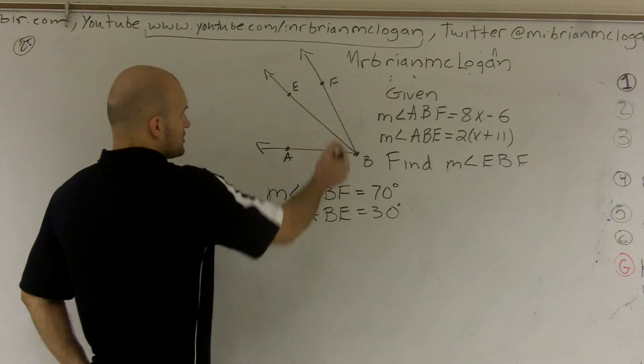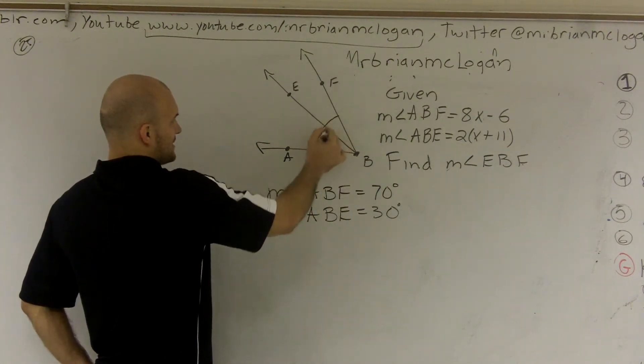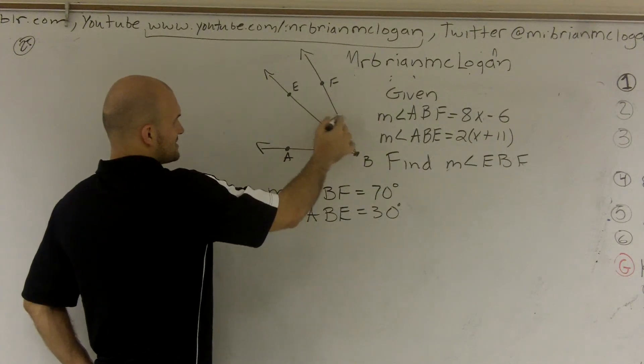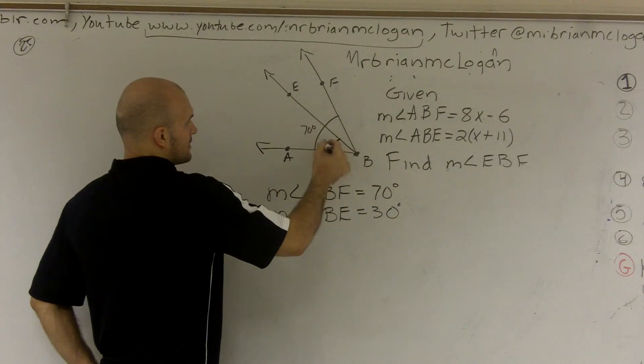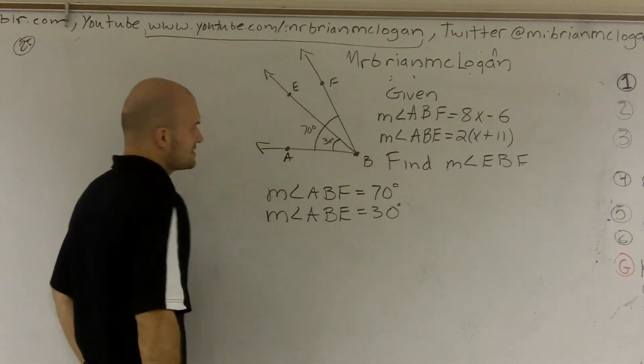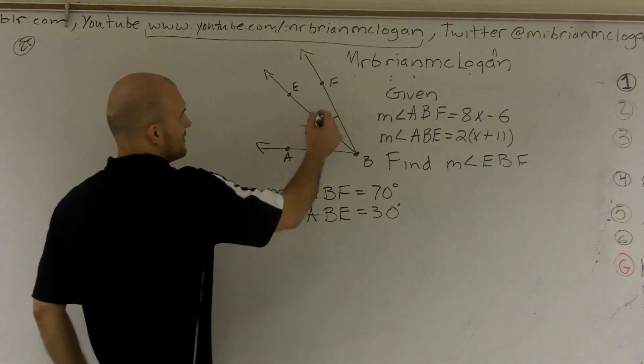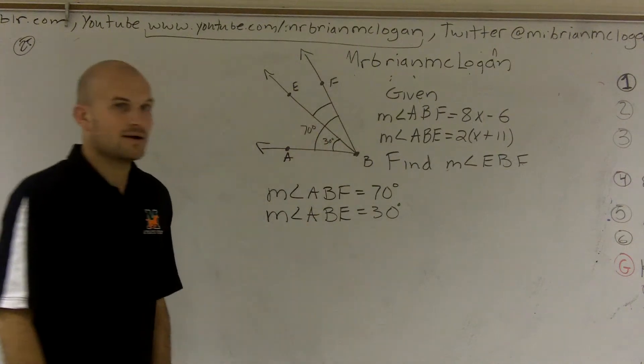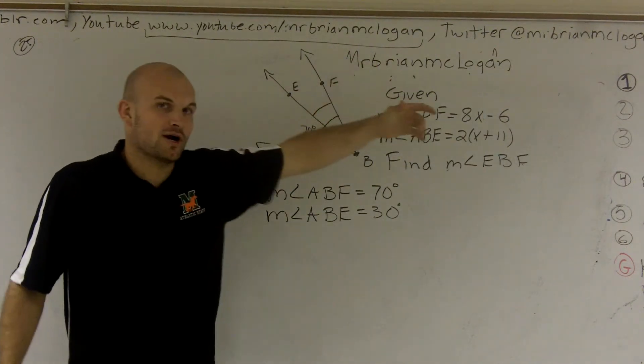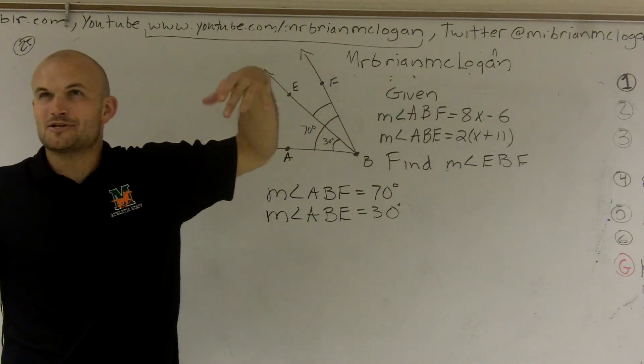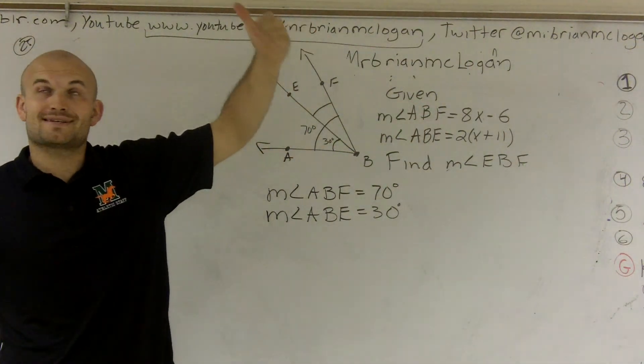Well, so what they're asking is if they say from here to here is 70 degrees and from here to here is 30 degrees, what is this? All right? Well, if I have the whole and then I have a part, to find the other part, you're going to have to subtract the whole from the part to get the other part.